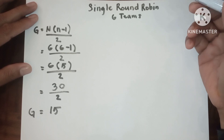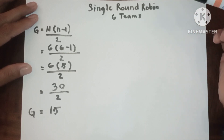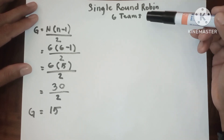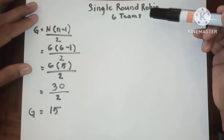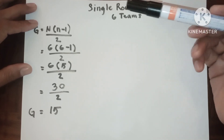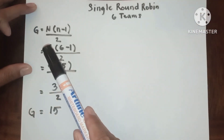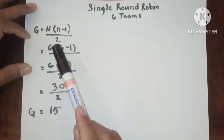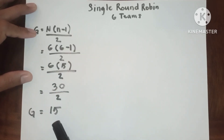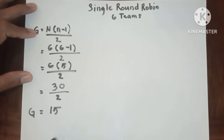Hello everyone. This is single round robin for six teams, or six number of entries, using the formula for single round robin. We have 15 games. Now let's proceed to round one.